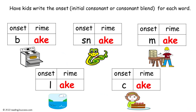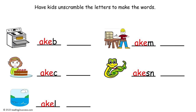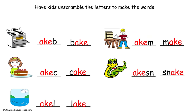The completed example shows: bake, snake, make, lake, and cake. Have kids unscramble the letters to make the words. This activity helps kids see that the onset changes and the rhyme stays the same for each word. And this is a completed example.